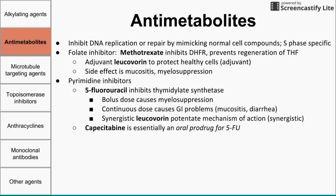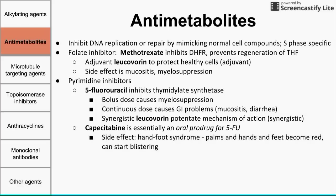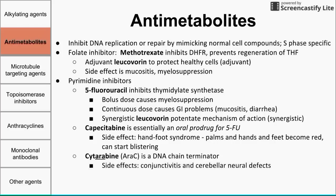Capecitabine is essentially an oral prodrug for 5-FU. 5-FU normally is not administered orally; capecitabine must be further processed in the body before it becomes active. One side effect of capecitabine is hand-foot syndrome — your palms and feet become red and can start blistering. The last of the pyrimidine inhibitors is cytarabine, or Ara-C, which is a DNA chain terminator. Its side effects are conjunctivitis and cerebellar neural defects — CCC: cytarabine, conjunctivitis, cerebellar defects.